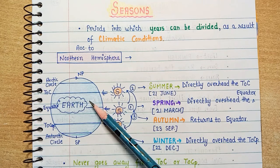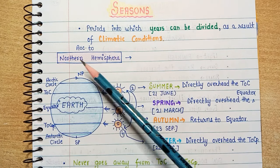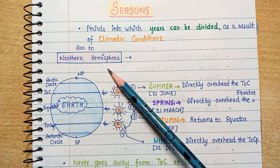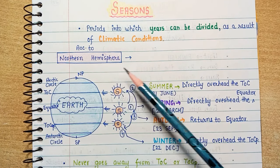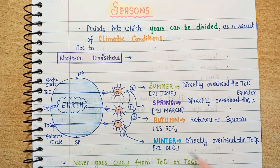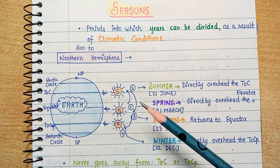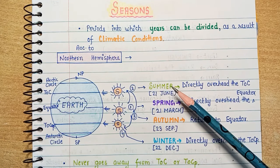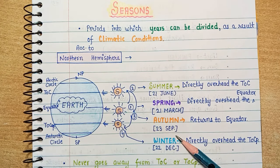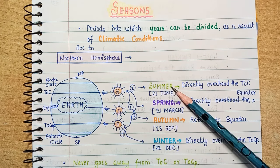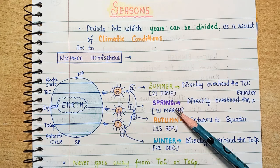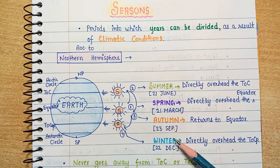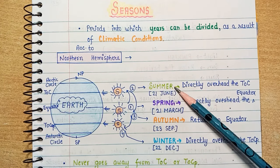Now we will talk about the northern hemisphere. Here we have a basic understanding. How many seasons are in India? If we talk about four main seasons: summer, spring, autumn, winter.